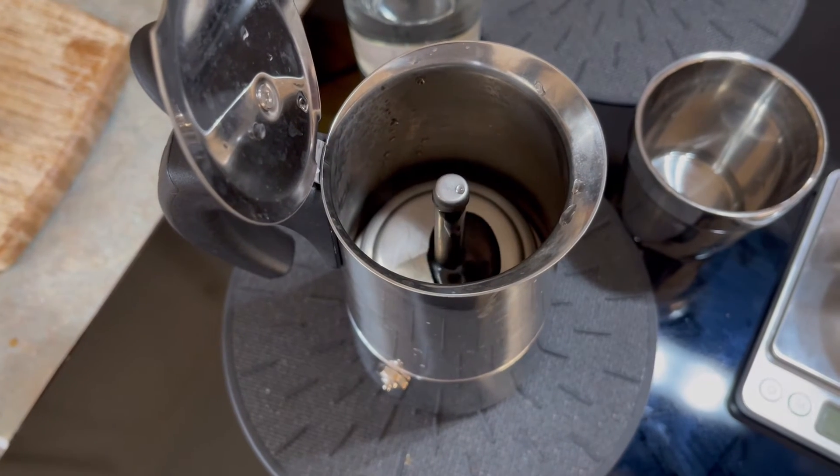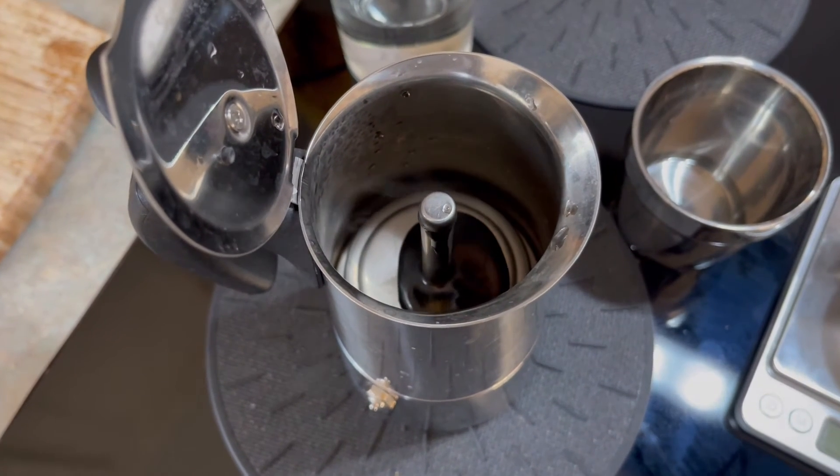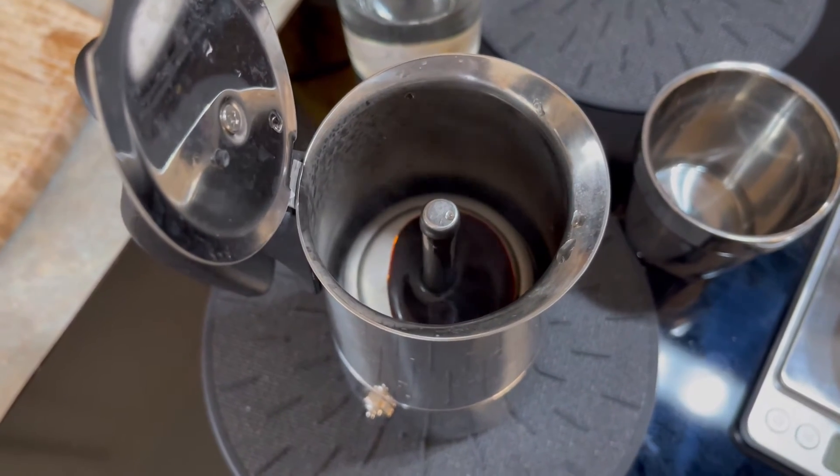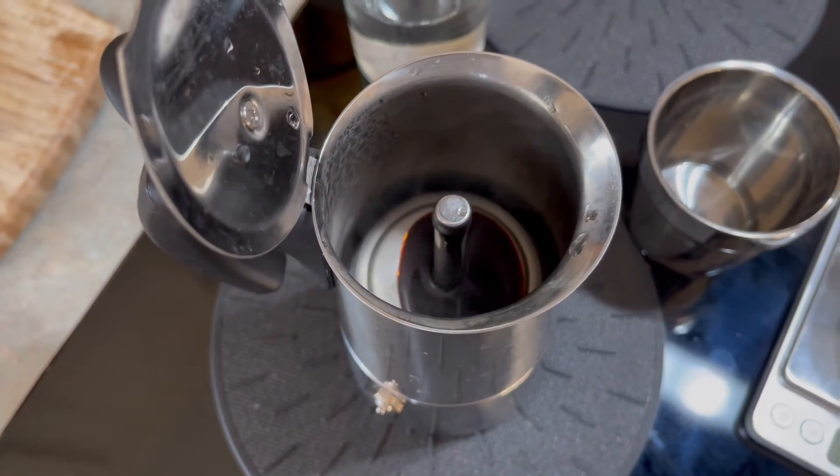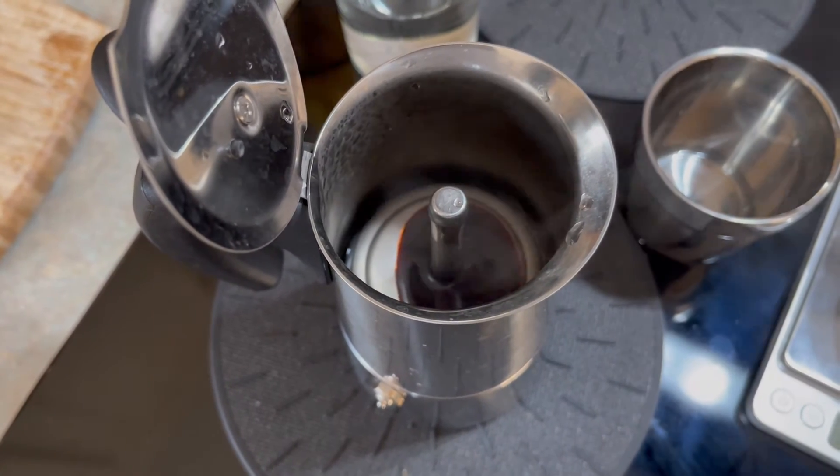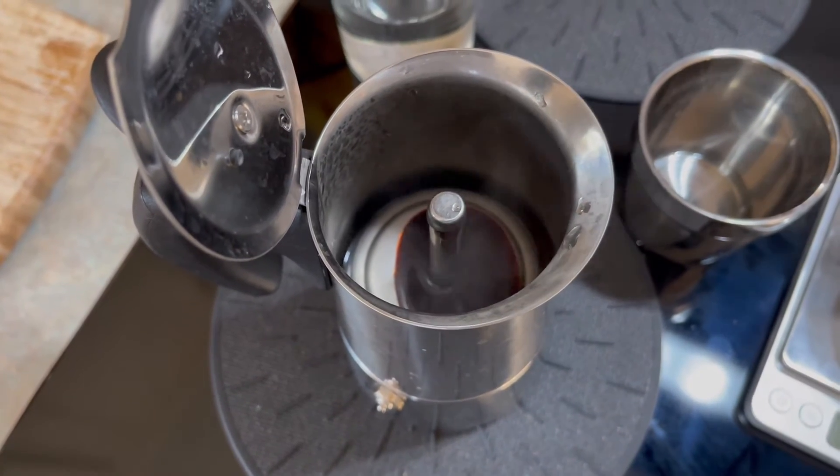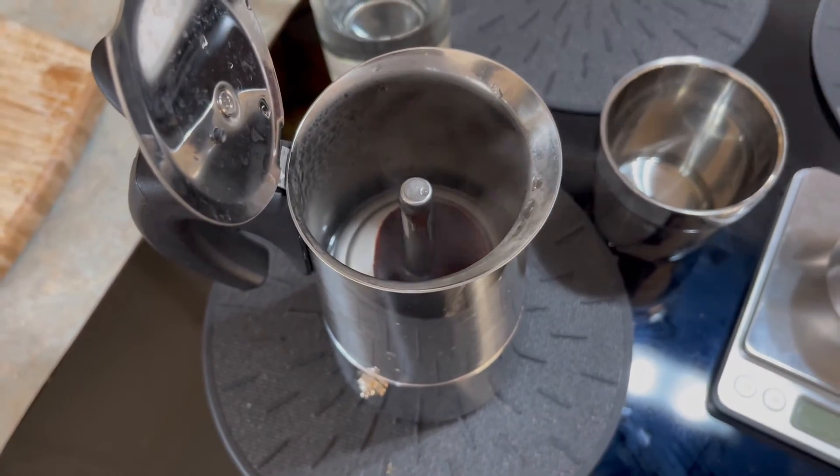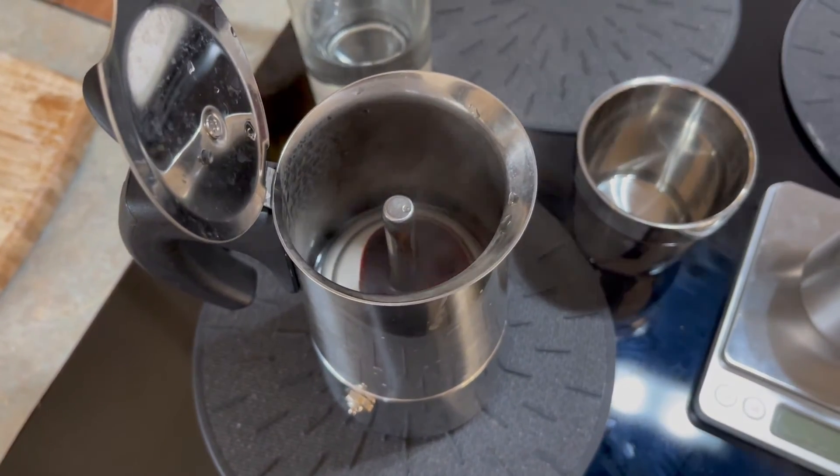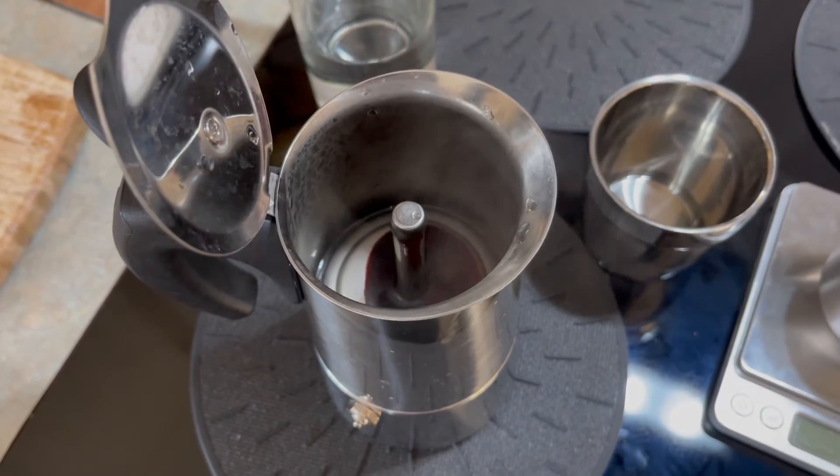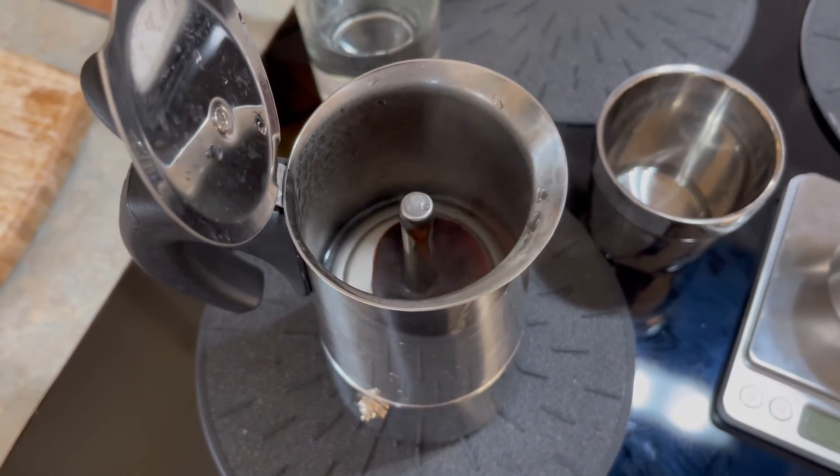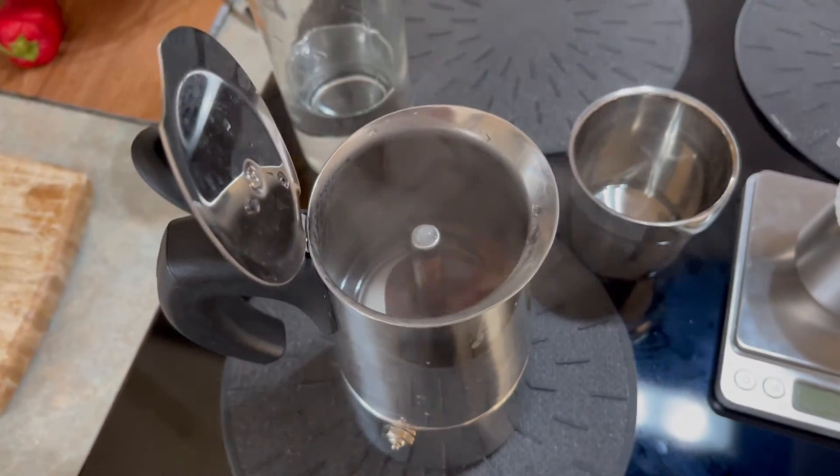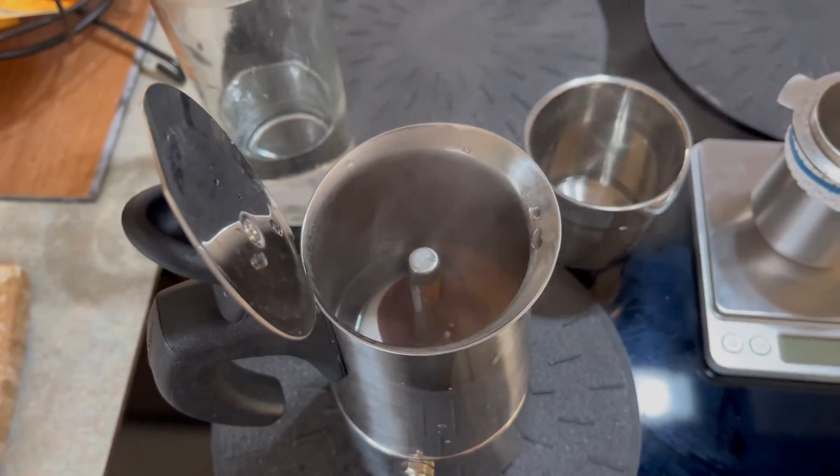There it goes - that's the beginning of the brew. You'll notice it's very dark, and you want it that way. As soon as this starts to sputter, cut the heat immediately and take it off, because at that point you're over-extracting and the coffee would be very bitter. You can see it's coming through with a nice dark color.